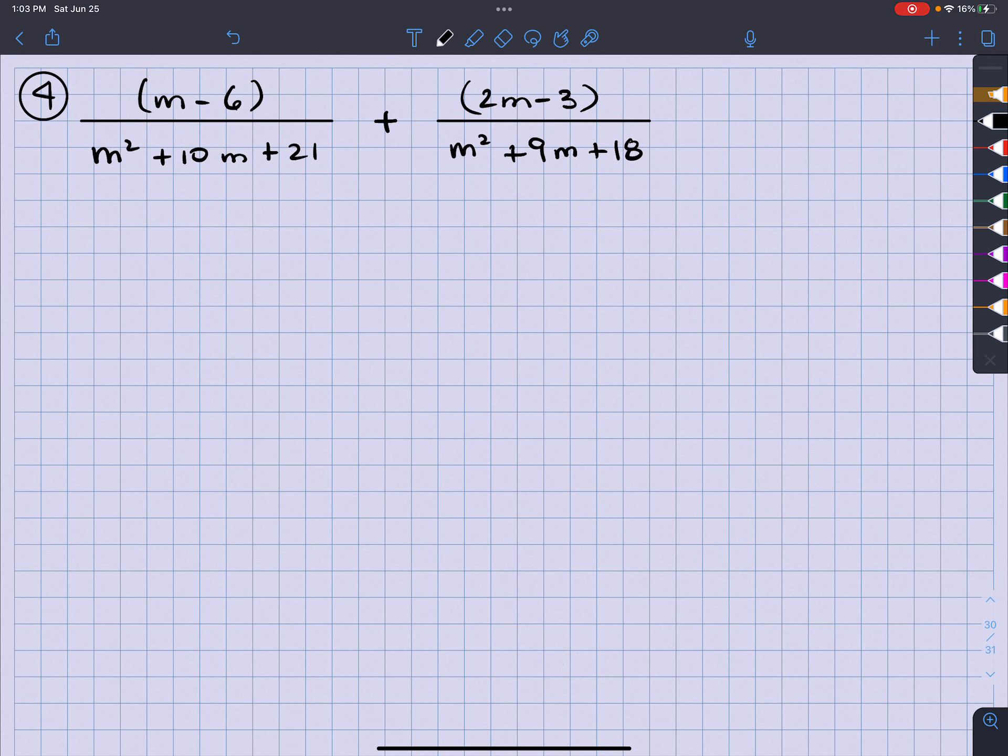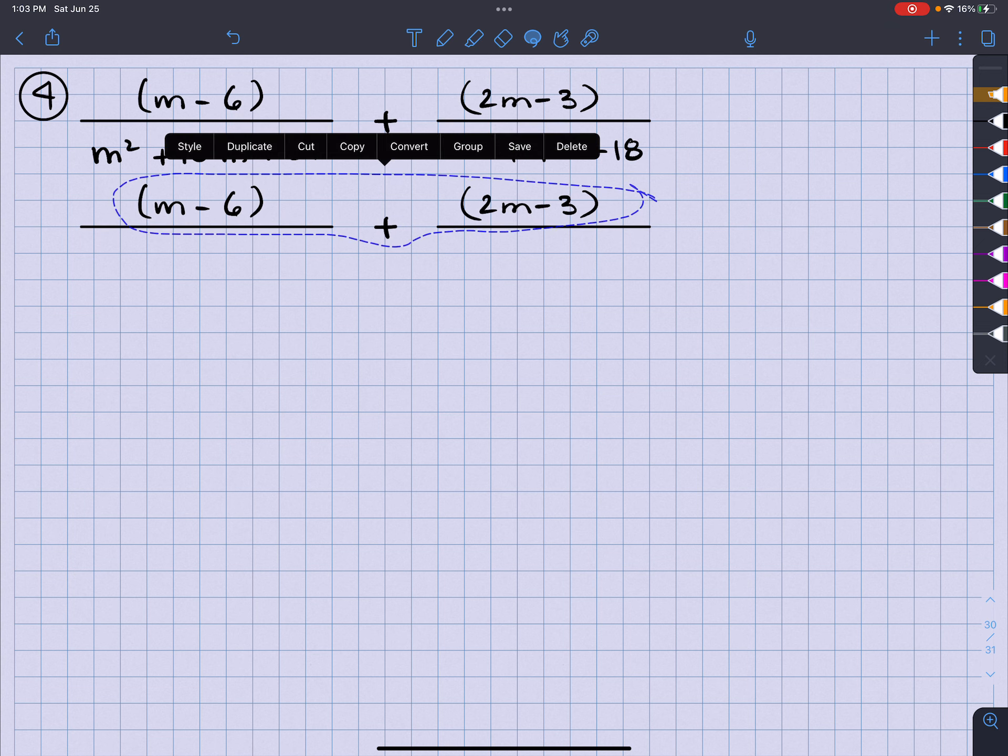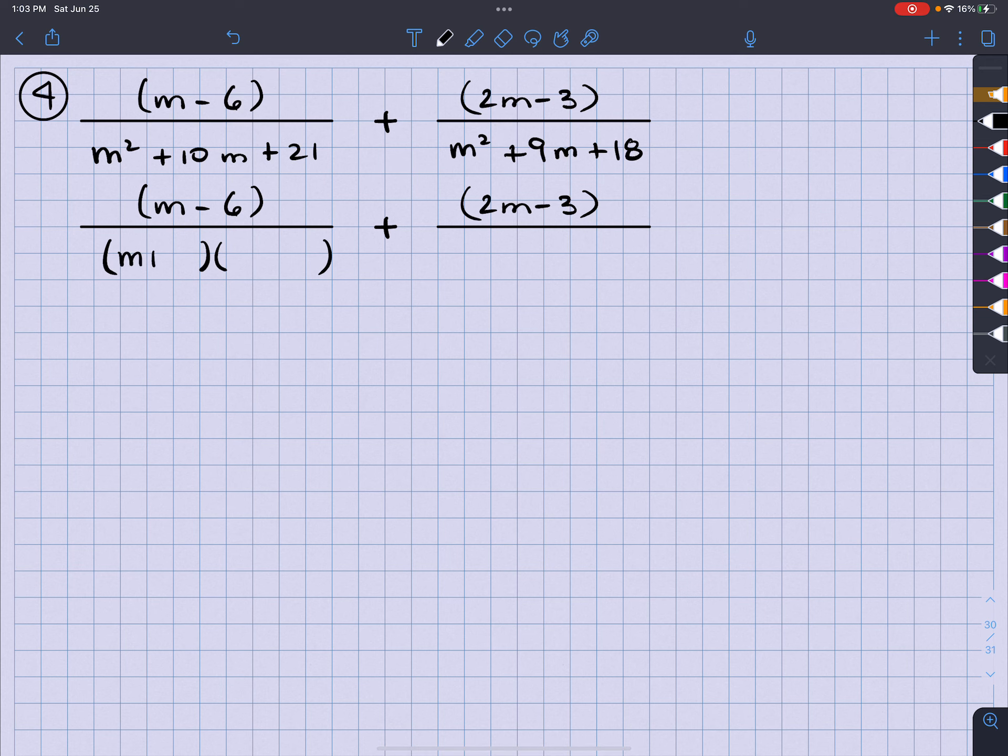So what I should have here, out of the pure laziness of myself, I'm going to go ahead and duplicate this and bring it down. And then I'm going to go ahead and factor this one here. This one here is going to factor out to be M plus 3 and M plus 7. This one on the right is going to be M plus 3 and M plus 6.